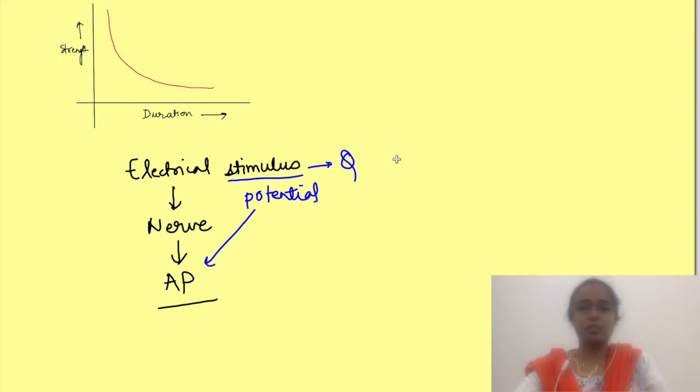This is known as threshold stimulus and since charge is equal to current into time, any stimulus has two features, a stimulus strength and the duration for which it is given. Same amount of charge can be delivered by changing either the current or the time.